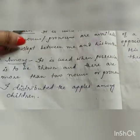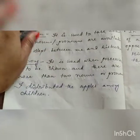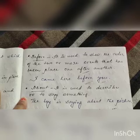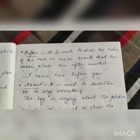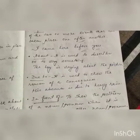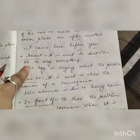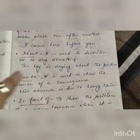Next, 'before' — it is used to show the order of two or more events that have taken place one after another. 'Before' means something or someone already came earlier. For example: 'I came here before you.' Next, 'after' — the opposite of before. Next, 'about' — whenever you are giving a description about something, you use 'about'. It is used to describe something or say something about it. For example: 'The boy is saying about the picture' — the boy is giving a description about the picture.